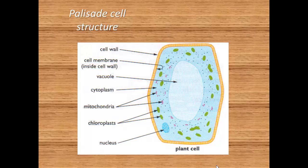This is a diagrammatic form of the palisade cell structure. It contains all the various components: cell wall, cell membrane, vacuole, cytoplasm, mitochondria — which are where aerobic respiration takes place — and then lots and lots of chloroplasts.